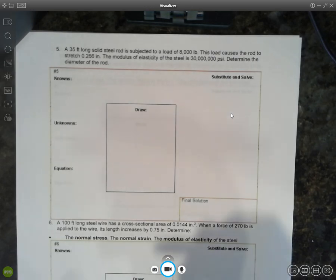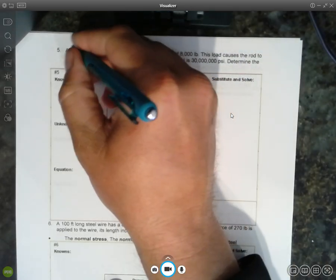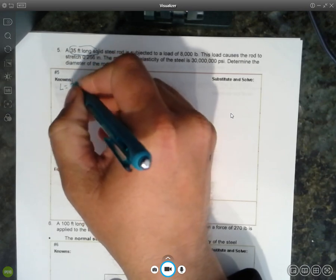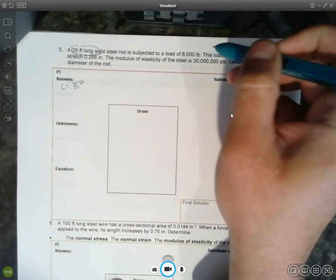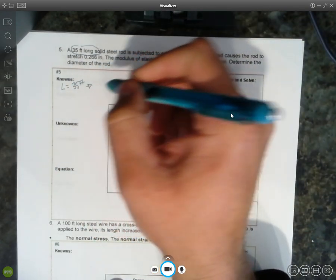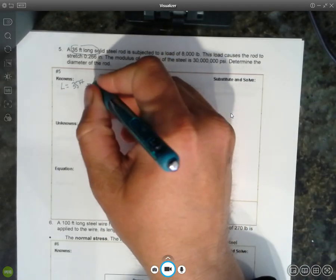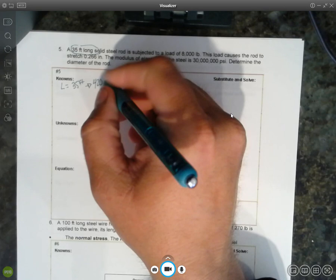All right. So we know that the rod is 35 feet long. So that's my L, 35 feet. And keep in mind, everything we've done so far is in inches. So 35 times 12 is 420. Hey, that's today's date.